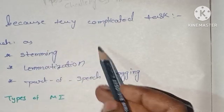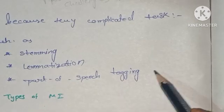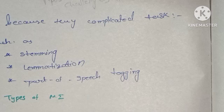Such tasks include stemming, lemmatization, and parts of speech tagging. These are types of morphological irregularities.